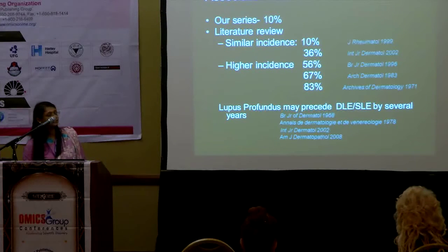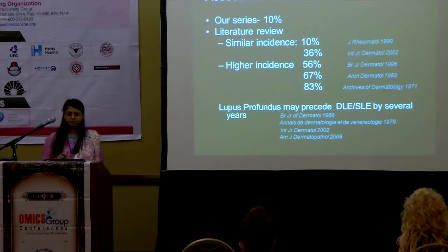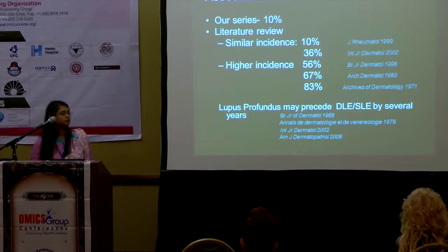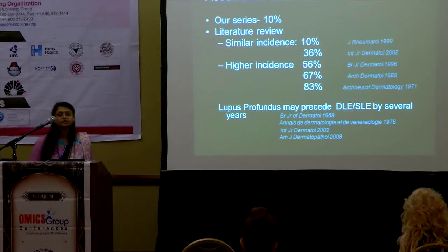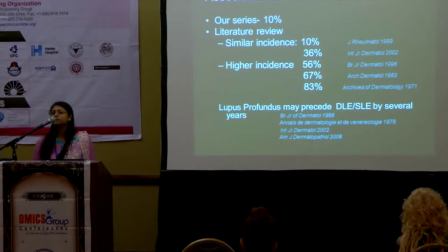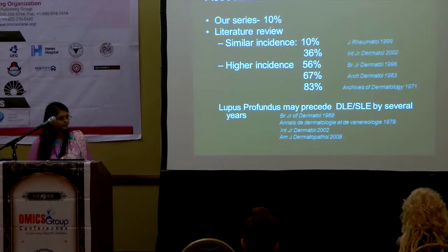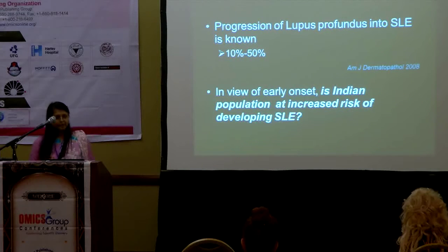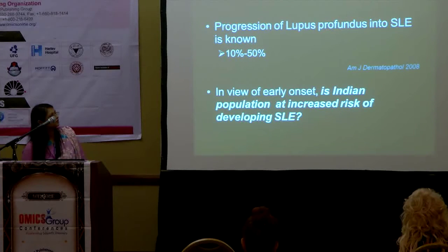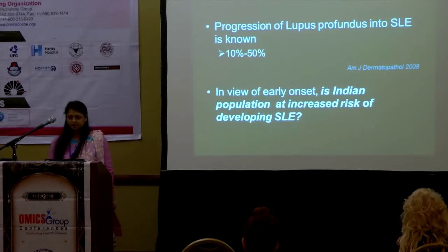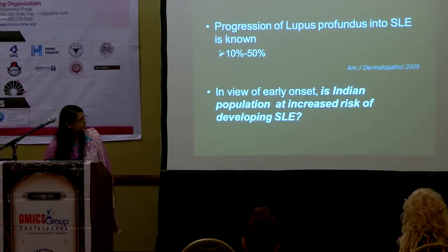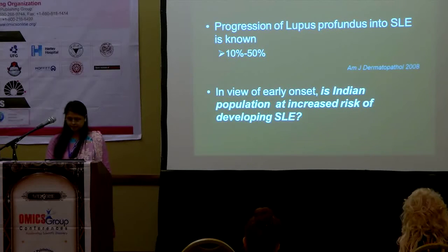Regarding association with SLE: in our series we found 10% association. Literature review shows a similar lower incidence of 10 to 30%, and a higher reported incidence of 56 to 83%. Lupus profundus may precede DLE or SLE by several years, and progression to SLE is well known in 10 to 50% of patients. Given the early onset in our case series, this population is at increased risk of developing SLE.